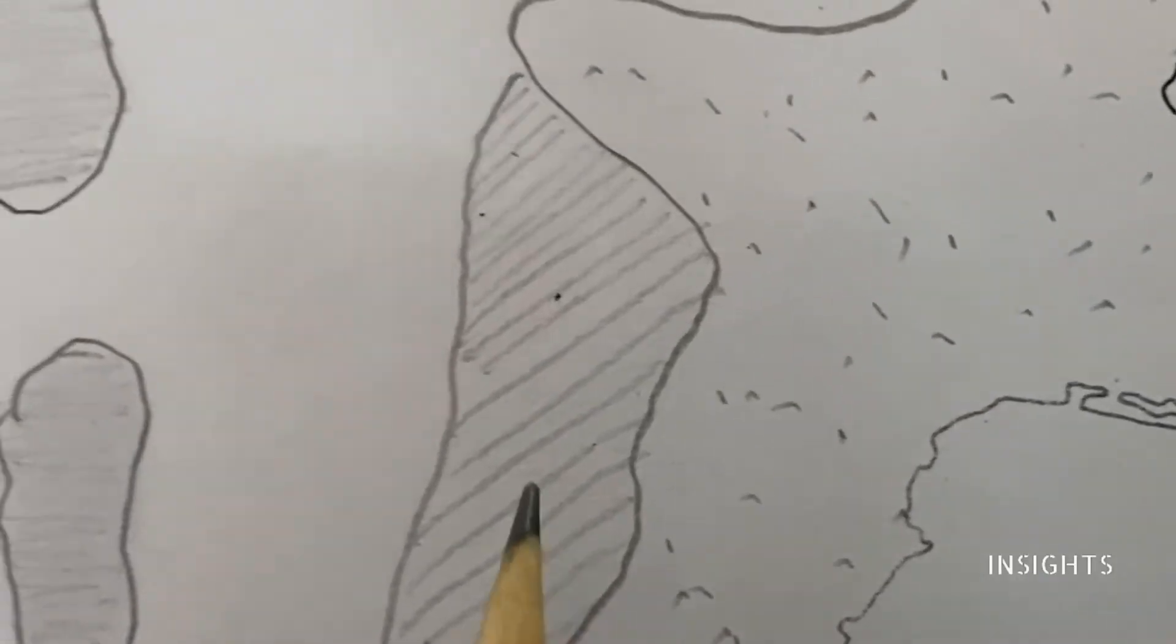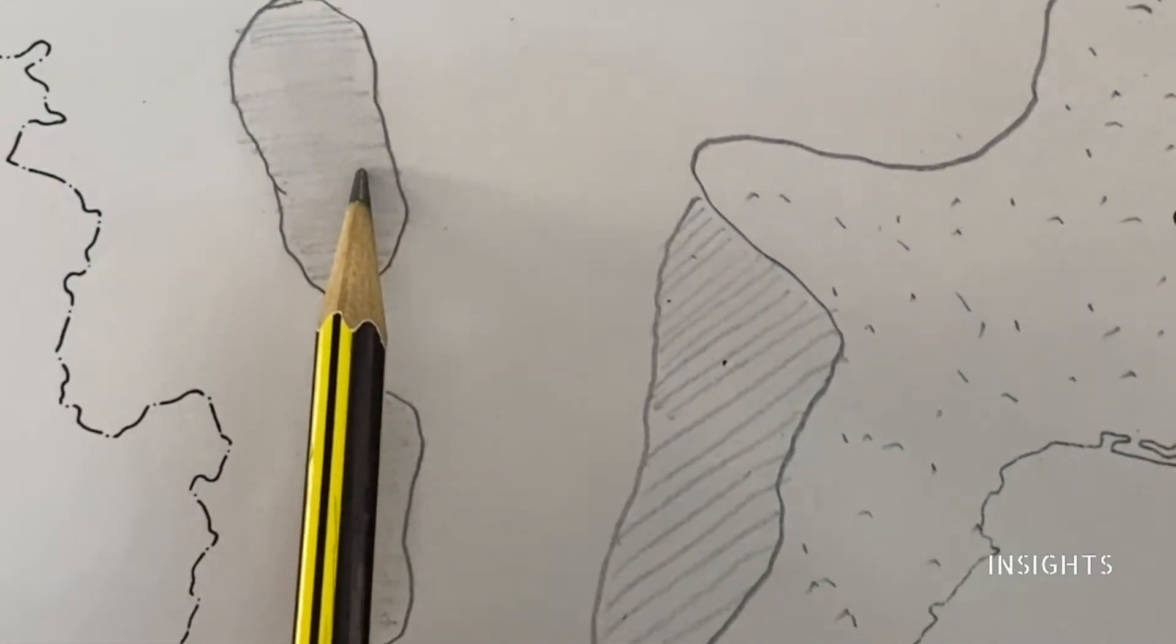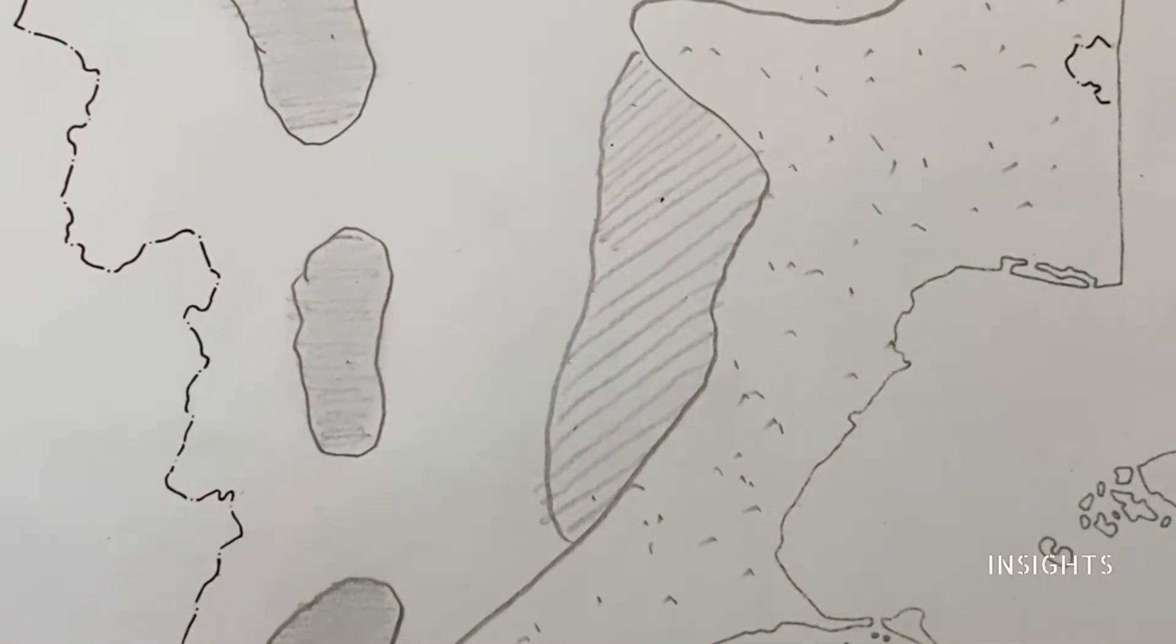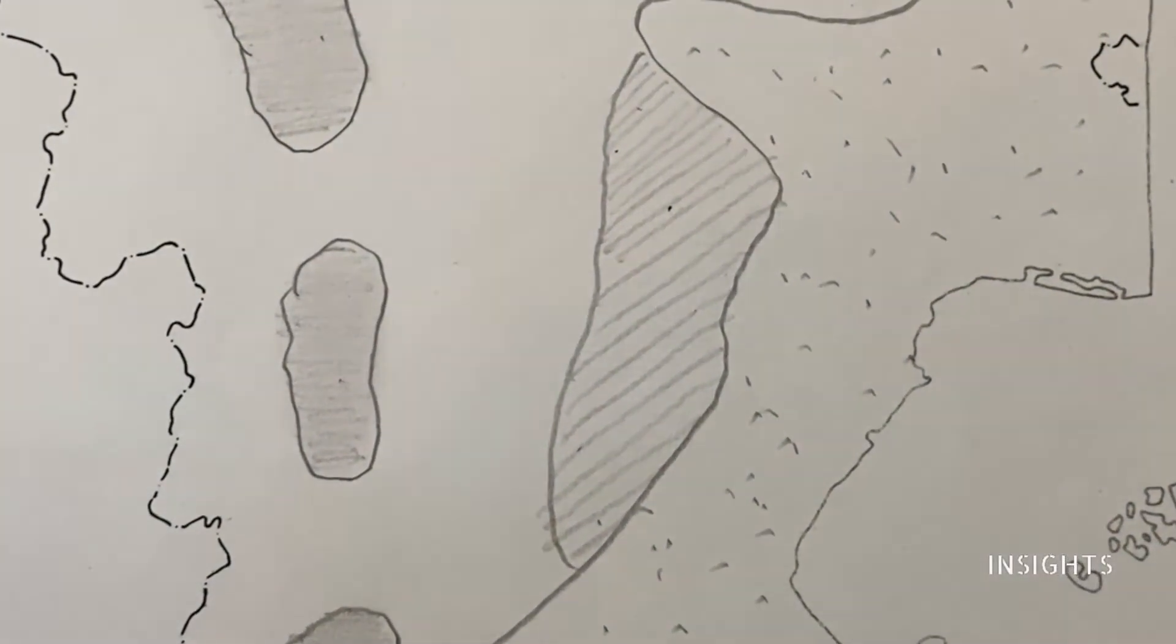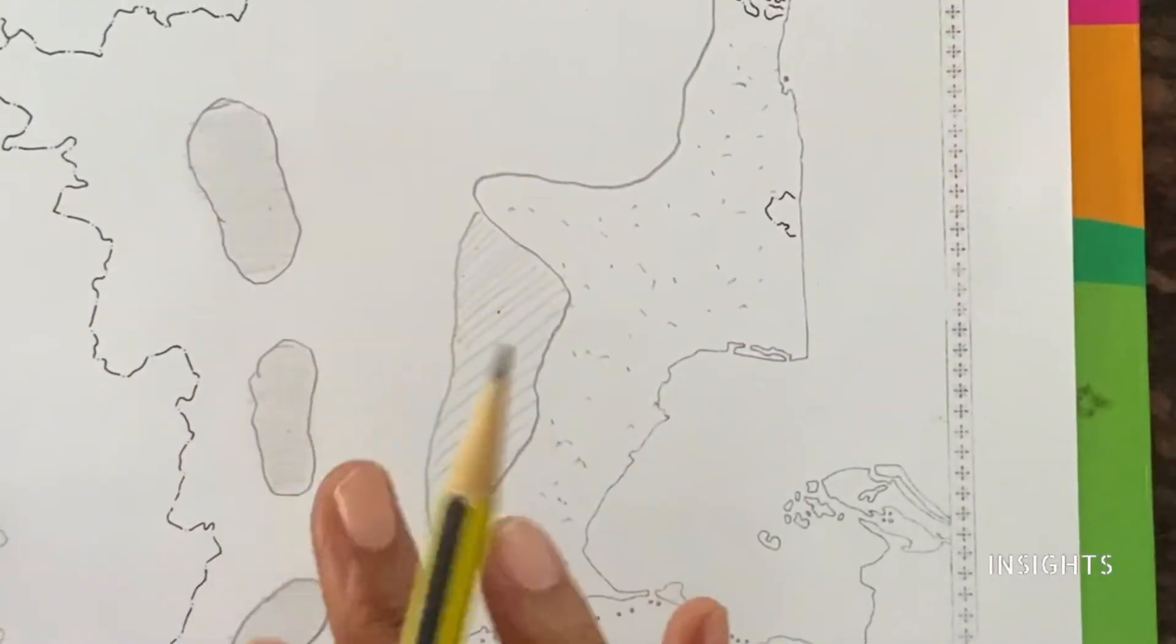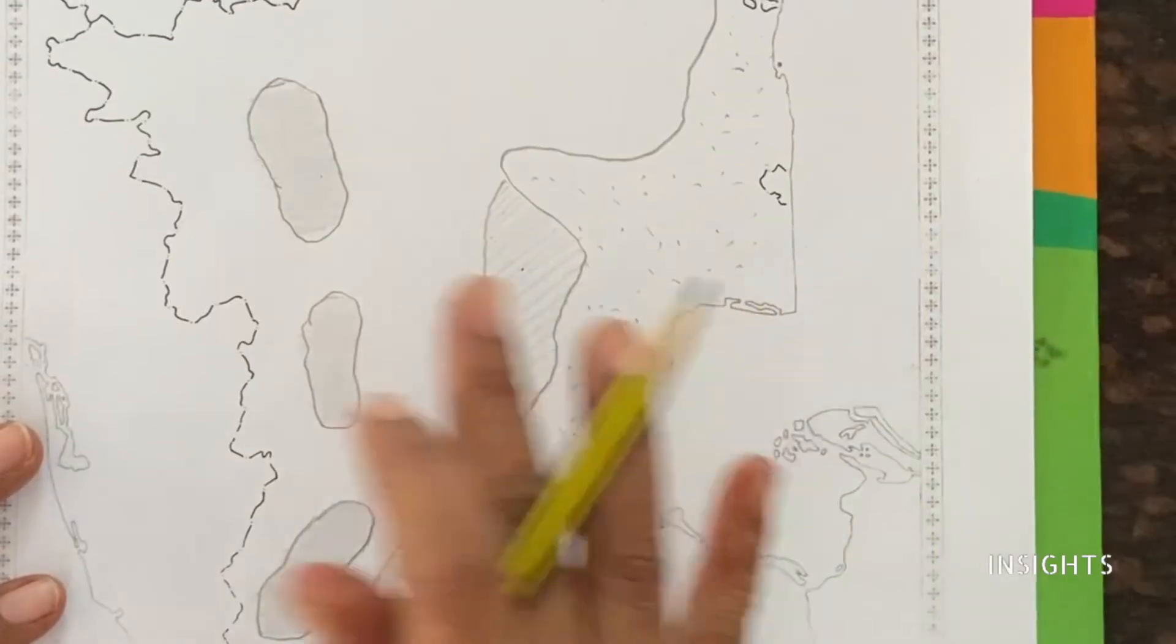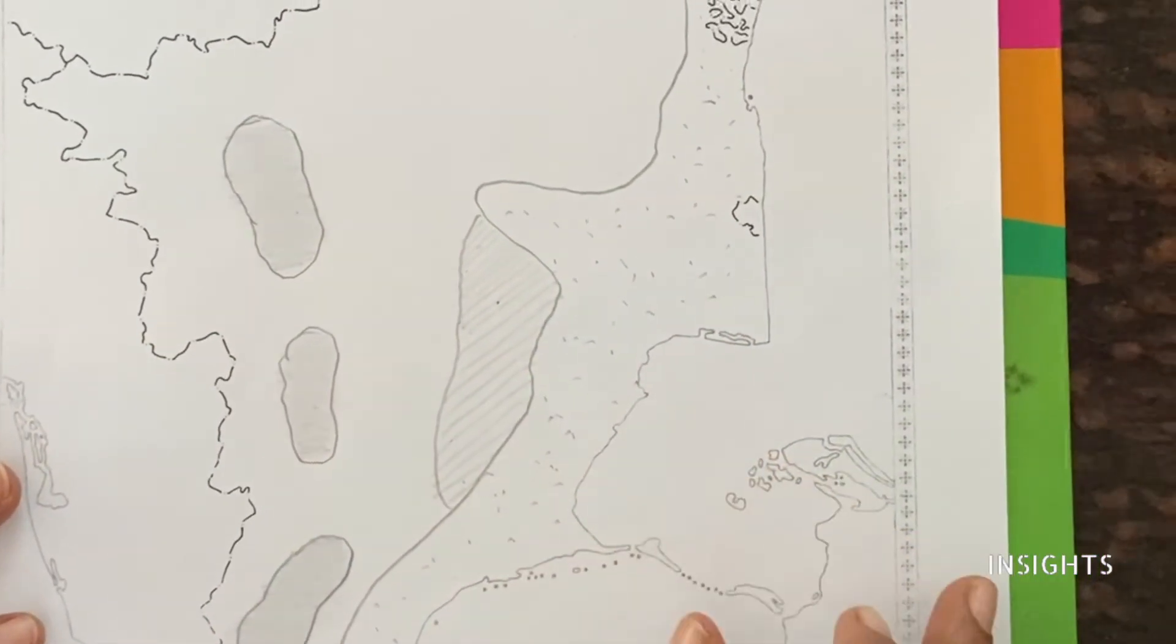Then, the third major type of soil is black soil. Near Trichy, then again down near Thirunelveli in the area. This remaining shaded area, what is it? It is red soil. These are the four major soils of Tamil Nadu.